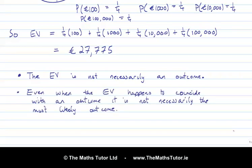And the second point is kind of related to the first one. And it is this, that sometimes the expected value happens to be one of the outcomes. That can happen in certain situations. But even when that happens, it's not necessarily the most likely outcome.